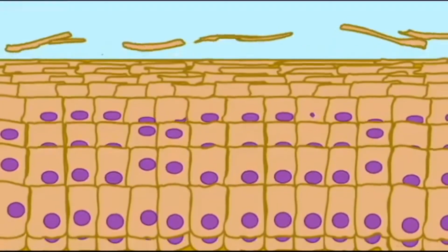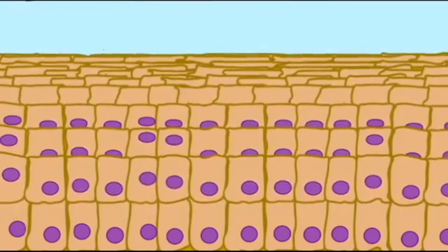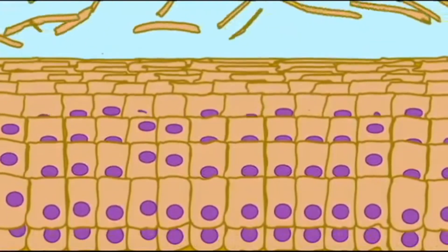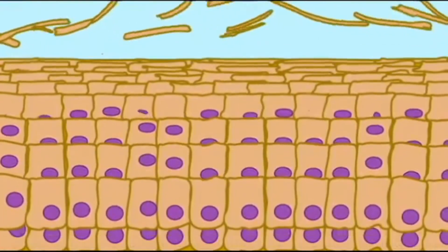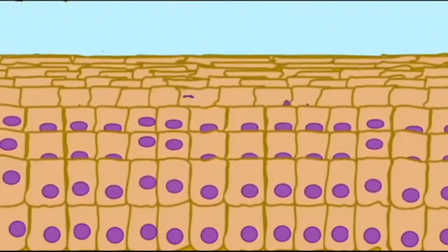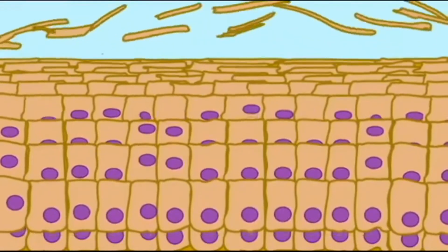Once the cell begins to push upward through additional layers, the cell gradually dies. The nuclei and other organelles degenerate, and the cell becomes a dead bag of the protein keratin.